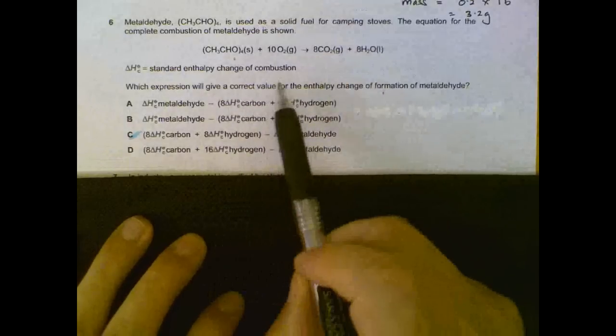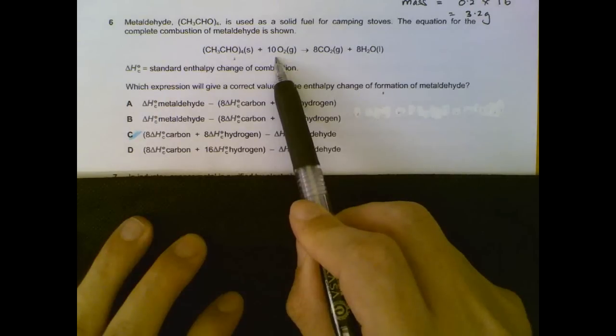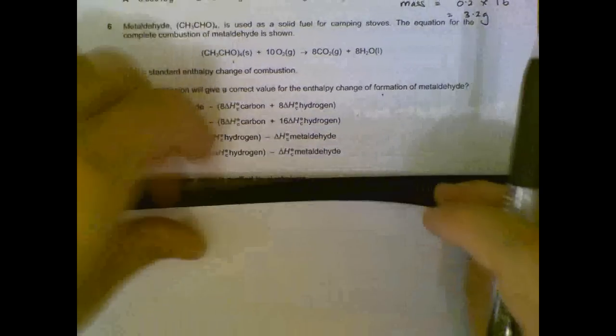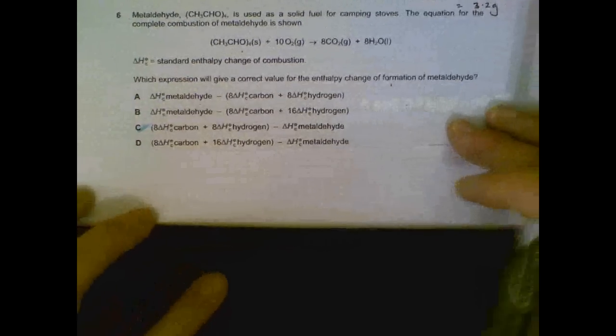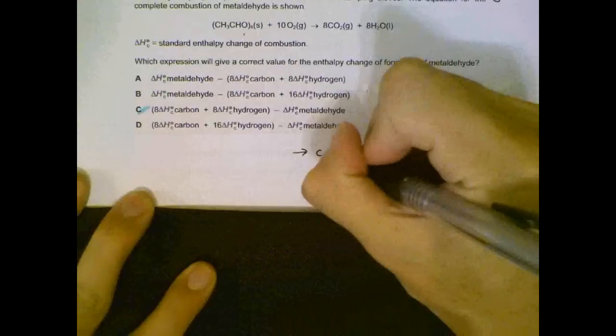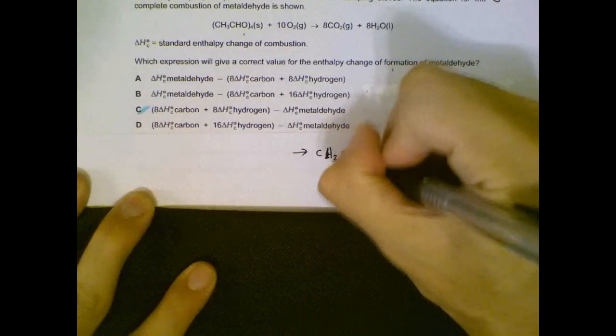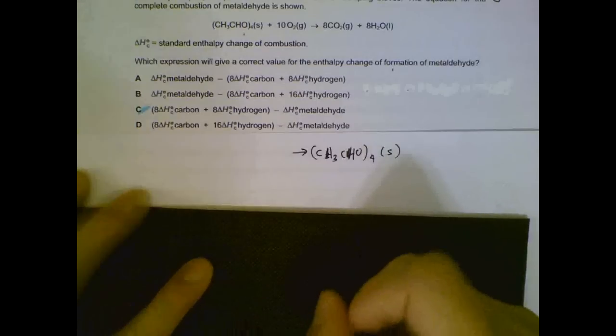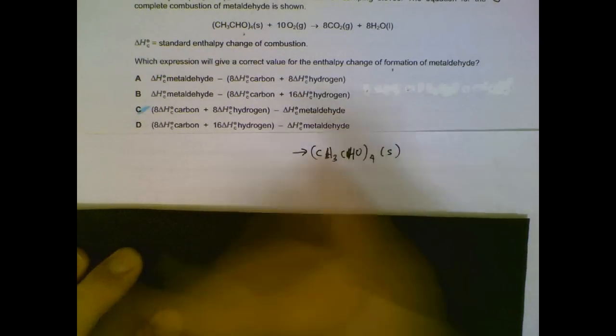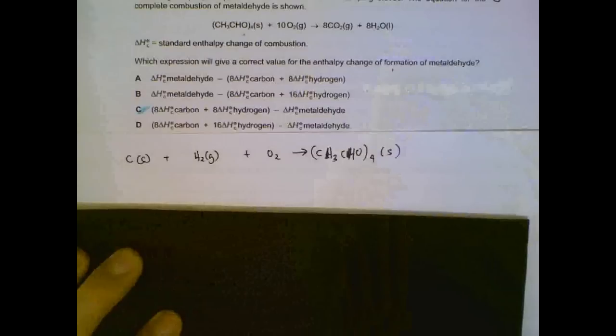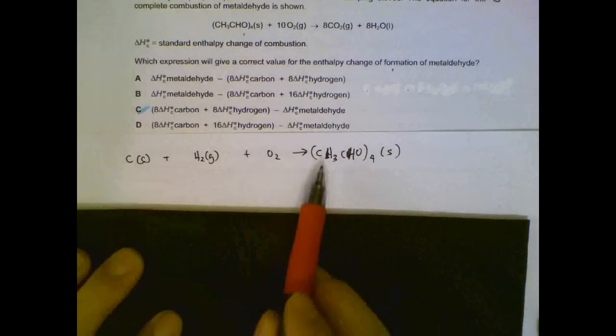Number 6. We have methanal heat of combustion. How can we find the heat of formation of methanal? So what we can do is to write out an expression for the heat of formation. One mole of methanal. Heat of formation is the forming from its constituent elements. So we have carbon, solid, hydrogen, H2, and we have oxygen, O2.